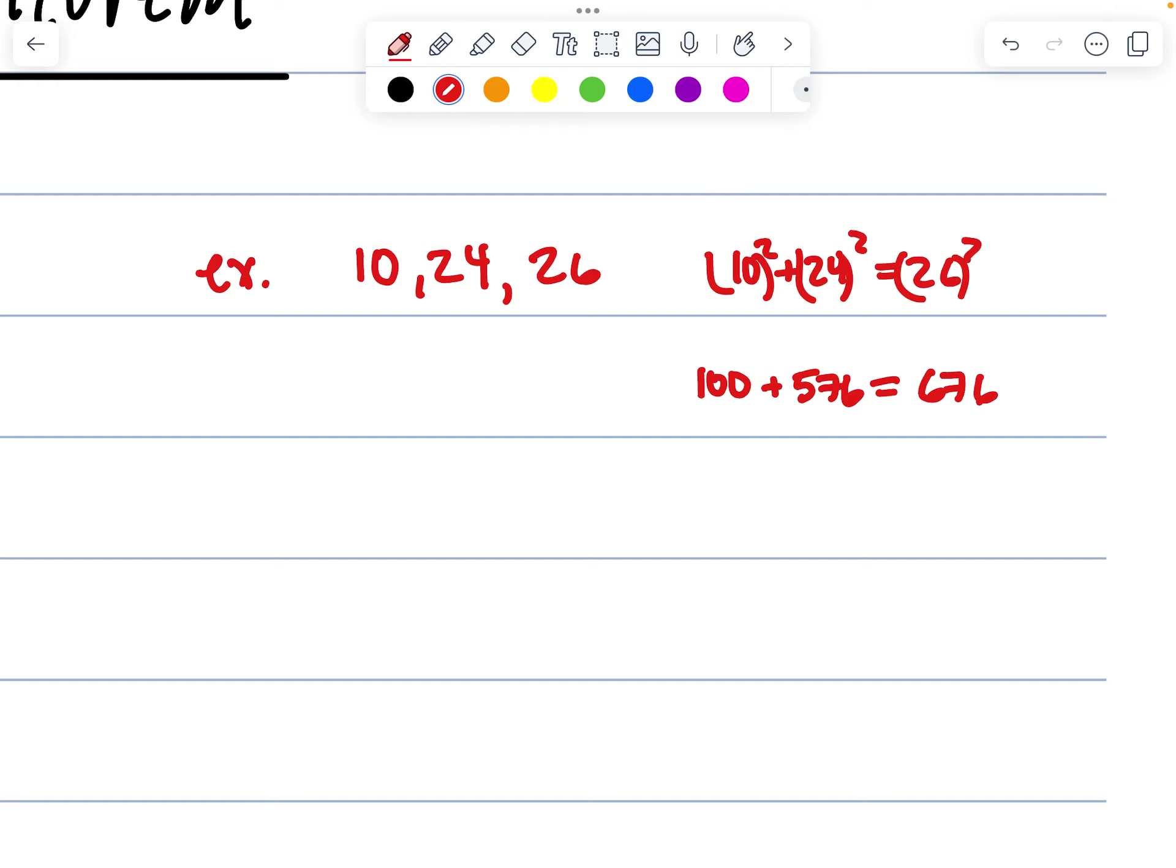Now, if you do the quick math, 100 plus 576 is 676, which is equal to 676, which means they are equal to each other, which means this is a right triangle. So we have a right triangle here.